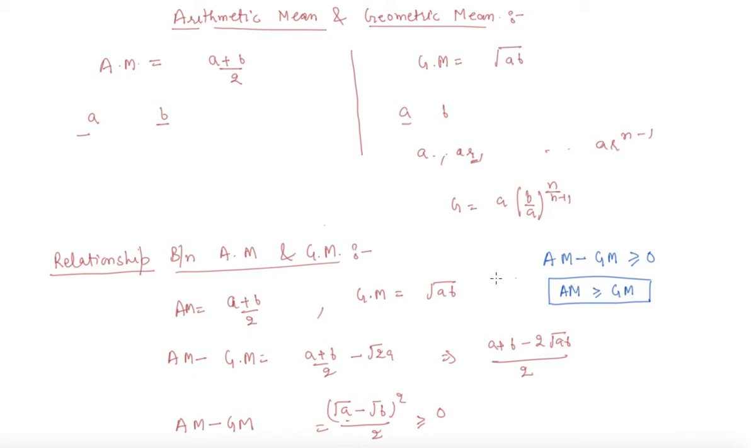So I can write AM always greater than or equal to GM. This is a very important identity students, which will be very helpful for you guys to solve any question.